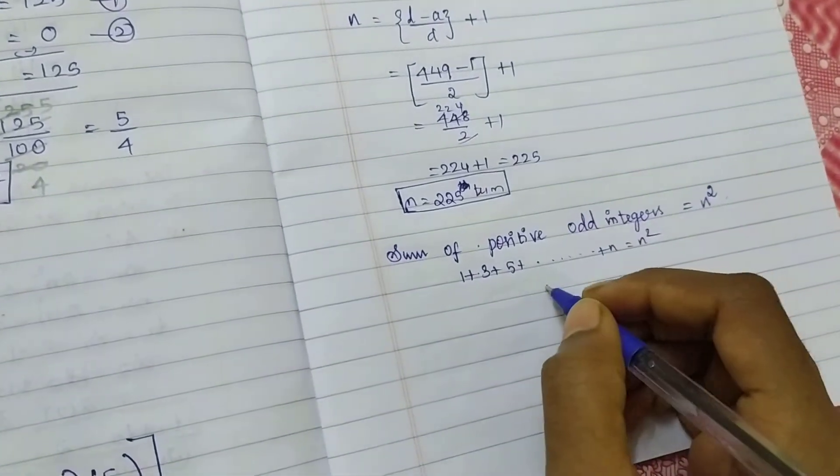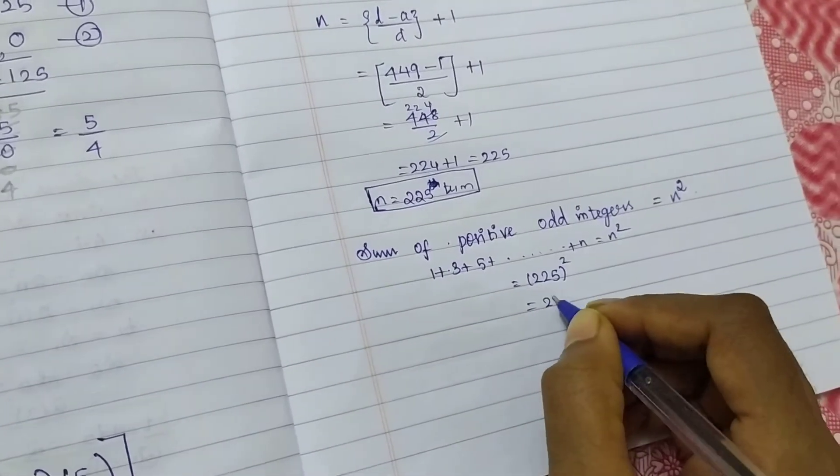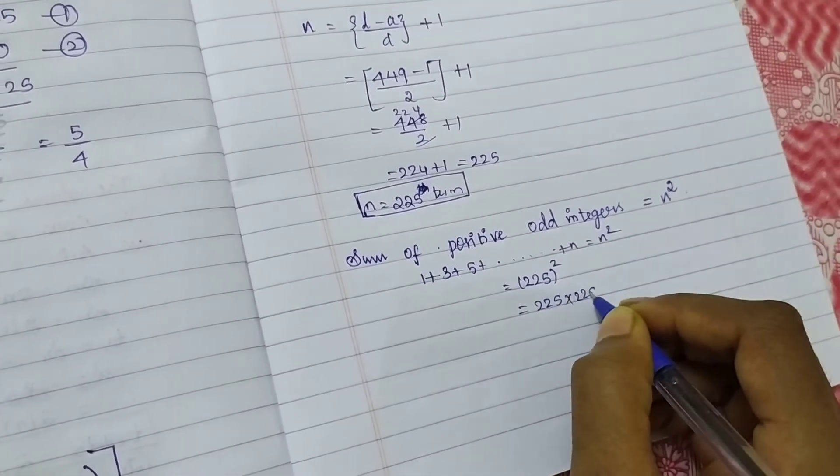So I know my N value. So by using this I can squaring get the answer. 225 times 225. What is the answer?